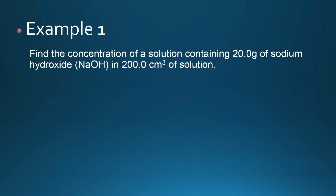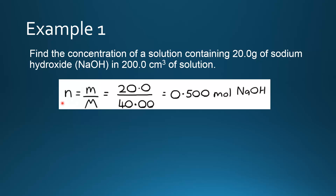Let's try an example. Find the concentration of a solution containing 20.0 grams of sodium hydroxide in 200.0 centimeters cubed of solution. First we need to change the grams to moles using N equals mass divided by molar mass. The mass of sodium hydroxide is 20.0 grams and the molar mass is 40.00, which gives 0.500 moles of NaOH.